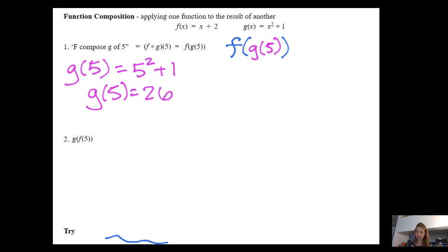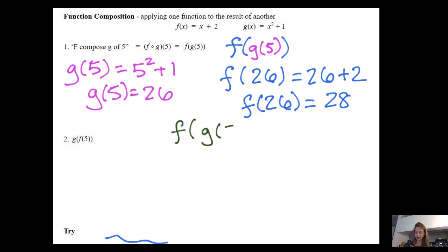So I can rewrite. This is F of 26. In other words, that's what's being asked here. So F of 26 is going to be 26 plus two. F of 26 equals 28. If I wanted to, I could say, okay, so F of G of five, or F composed G of five equals 28.